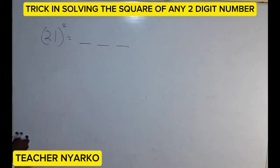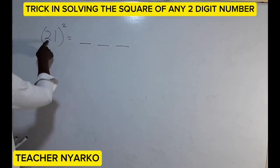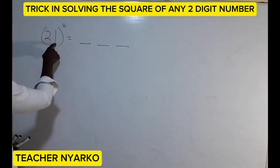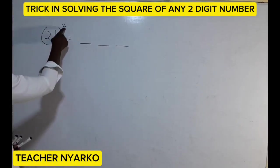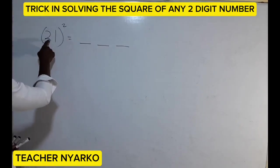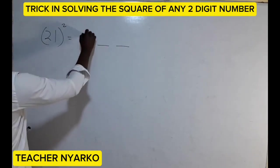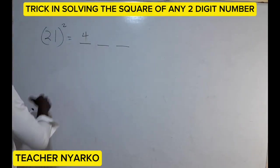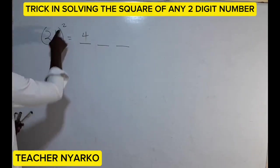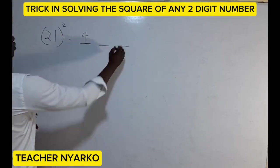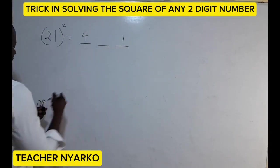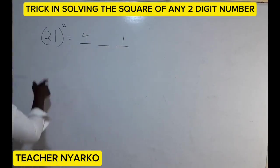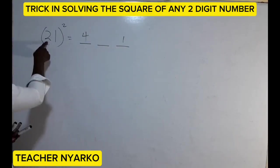The first digit is two, the second digit is one, and the exponent is two. So two squared gives you four — you have four here. Then one squared gives you one — you have one here.